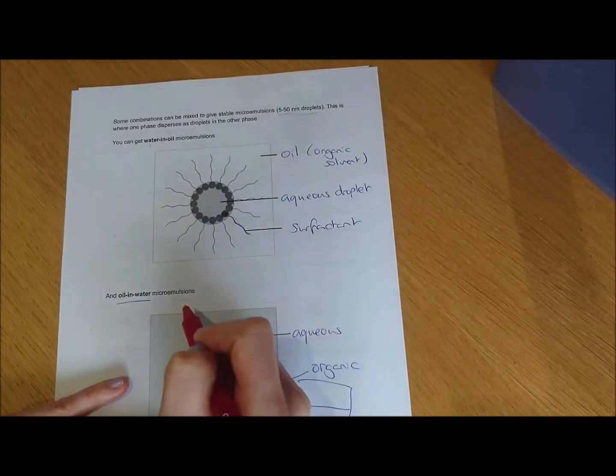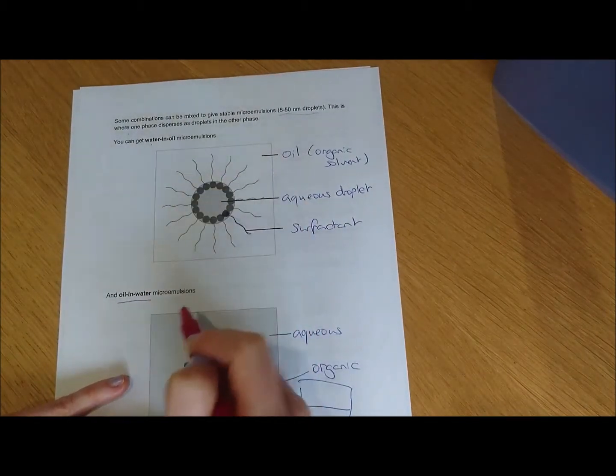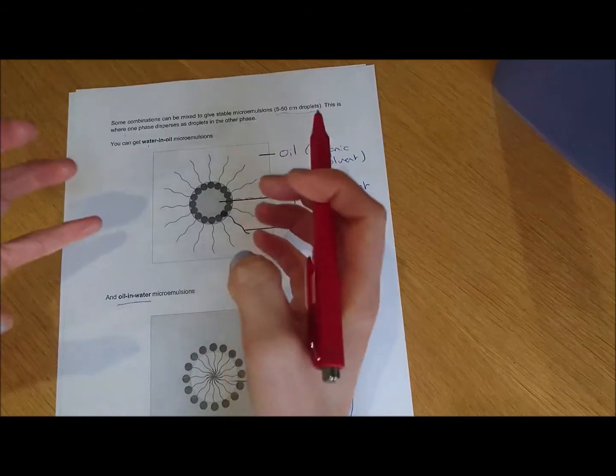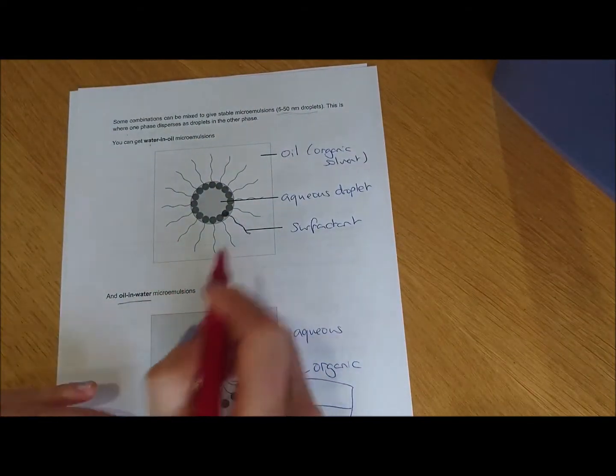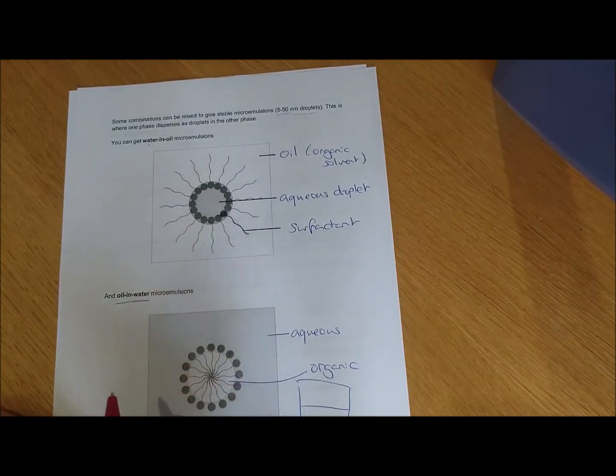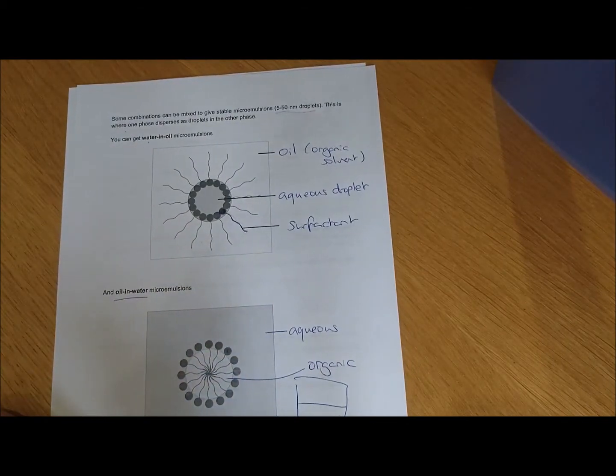The surfactant molecules are crowded around, stabilizing that water droplet and preventing two water droplets that are next to each other from colliding and combining and then eventually separating out into two phases, one on top of the other.